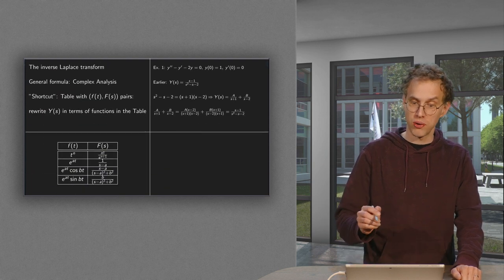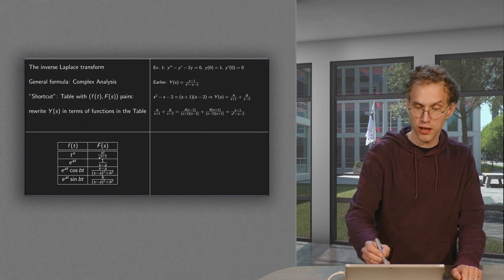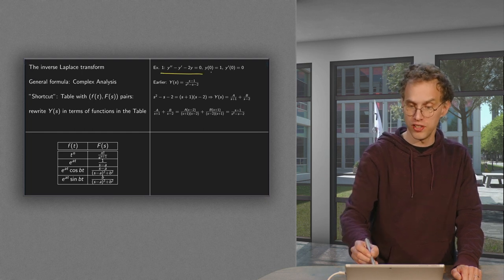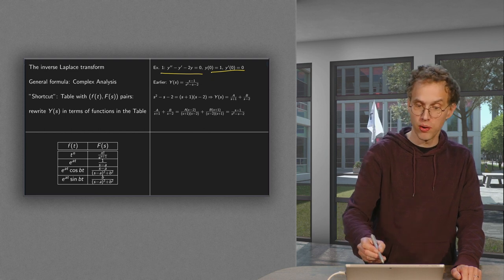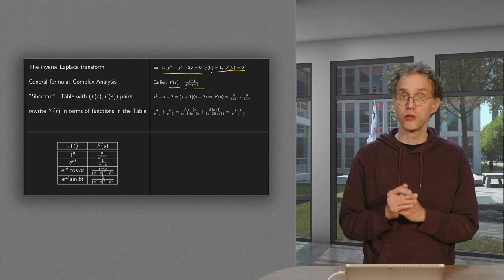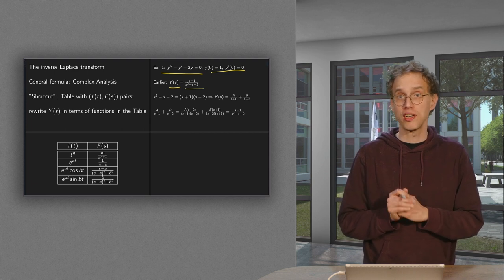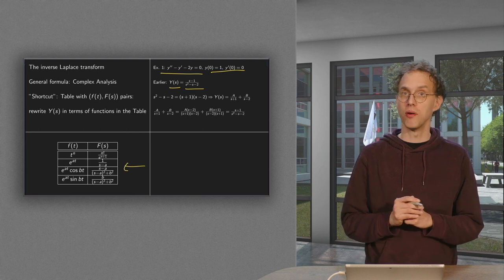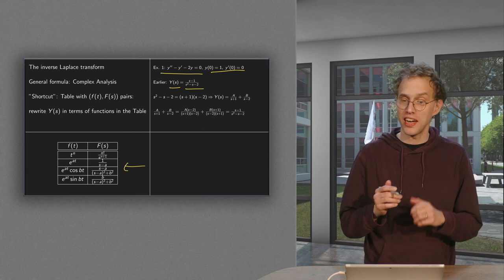So let's take a look again at our initial value problem: y double prime minus y prime minus 2y equals 0 with these initial conditions. And in the previous video we found y-bar(s) over here. I now want to transform back. However this y-bar(s) is not directly in our table. However we can rewrite it a bit.